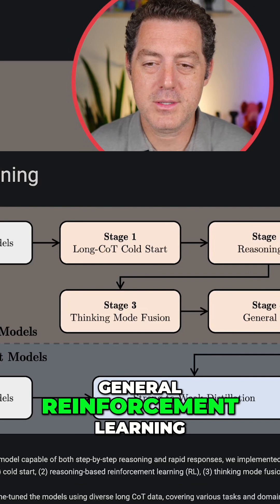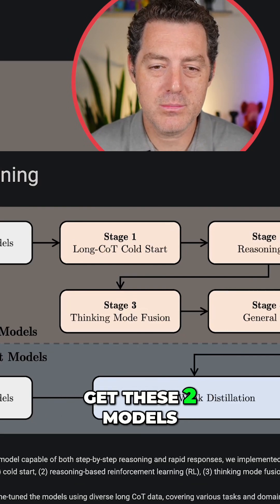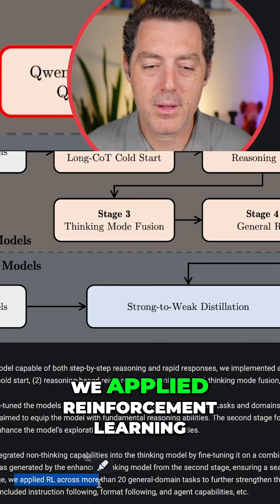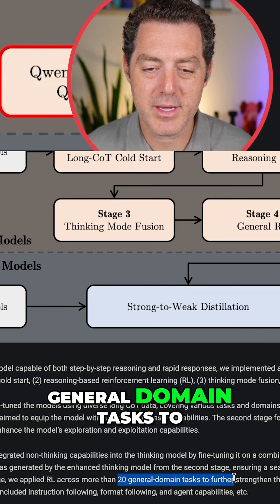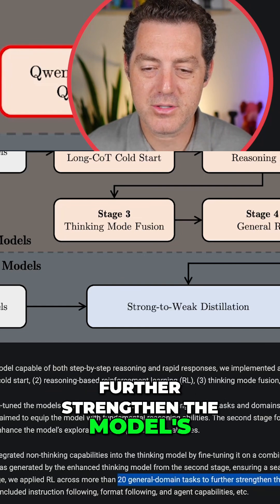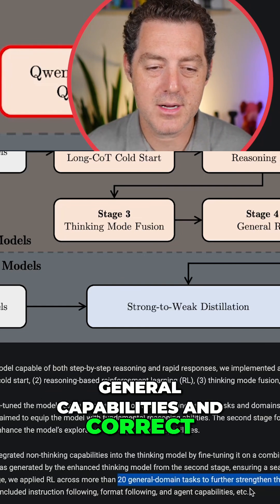And then stage four, general reinforcement learning. That is where we get these two models. In the fourth stage, we applied reinforcement learning across more than 20 general domain tasks to further strengthen the model's general capabilities and correct undesired behaviors.